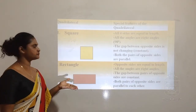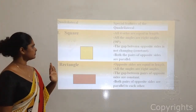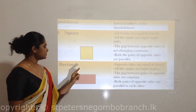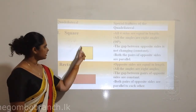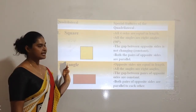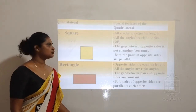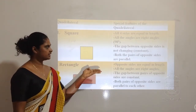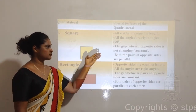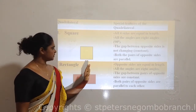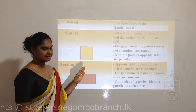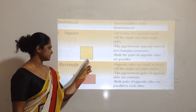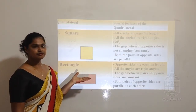The well-known quadrilaterals are square and rectangle. The square is a quadrilateral - you can see it has four sides and four angles. When you measure these angles properly, you will find they are 90 degrees - these are called right angles. All four sides are equal in length - when you measure the length of these four sides, you will understand they are equal.